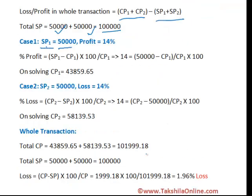In case one, selling price is 50,000 and profit is 14%. Using the formula: profit percentage equals selling price minus cost price divided by cost price, I calculate the cost price in the first transaction. Similarly, in case two, there is a loss of 14%. Using: loss percentage equals cost price minus selling price divided by cost price, I calculate the cost price in the second transaction.